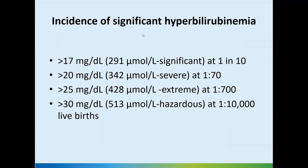When we say hyperbilirubinemia, any increase above normal is taken as such, but we are more worried about a level shown to cause brain injury. Brain injury can happen at any level, especially with hemolytic jaundice where there is a sudden burst of free bilirubin, or with conditions like birth asphyxia or sepsis which can damage the blood-brain barrier. In well, term babies we generally expect more than 25 mg/dL as the level above which the risk of brain injury increases.